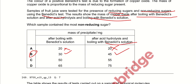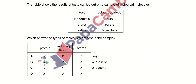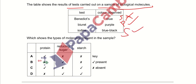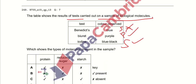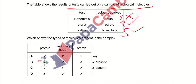The table shows the results of tests carried out on a sample of biological molecules. The Benedict test gives blue color — reducing sugars are absent. The biuret test gives purple color — proteins are present. The iodine test gives blue-black color — starch is present. So, which shows the types of molecules present in the sample? Proteins are present, reducing sugars are absent, and starch is present. So, option C is the right answer.